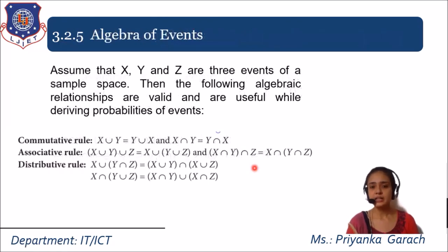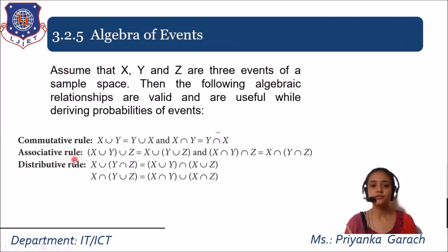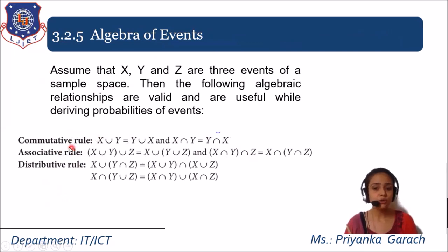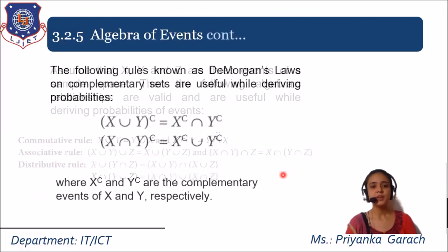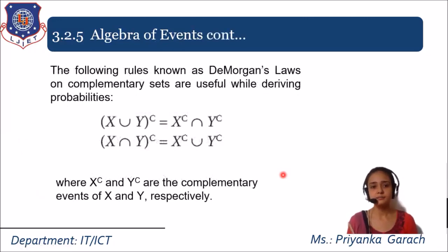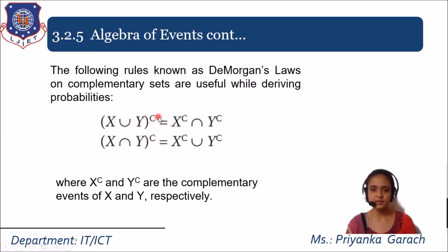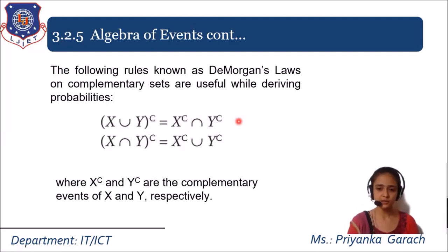The last terminology is the algebra of events. Assuming X, Y, and Z are three events of the sample space, the following algebraic relationships are valid: the commutative rule (X union Y = Y union X), the associative rule, and the distributive rule. Additionally, De Morgan's law on complementary sets states that the complement of (X union Y) equals X complement intersection Y complement, where X raised to C and Y raised to C are the complementary events of X and Y respectively.